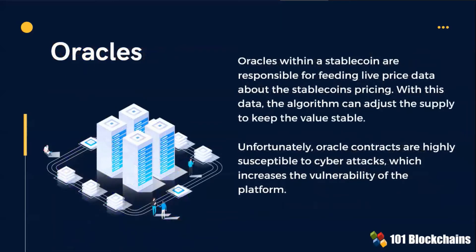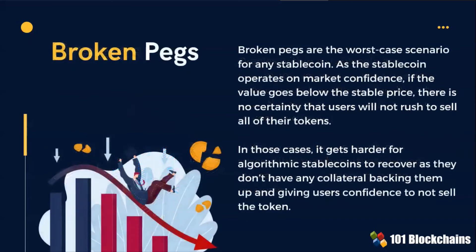Oracles are responsible for feeding live price data about the stablecoin's pricing. Oracle contracts are highly subject to cyber attacks. Broken pegs are the worst case scenario for any stablecoin. If the value goes beyond the stable price, it gets harder for algorithmic stablecoins to recover.